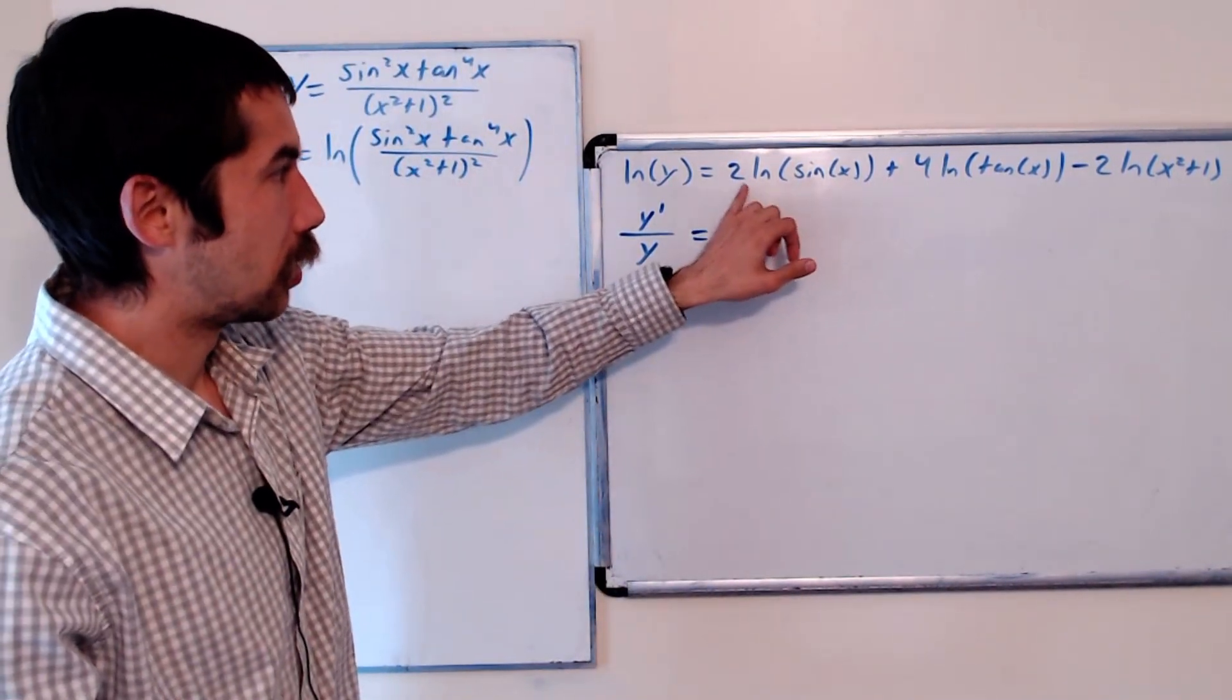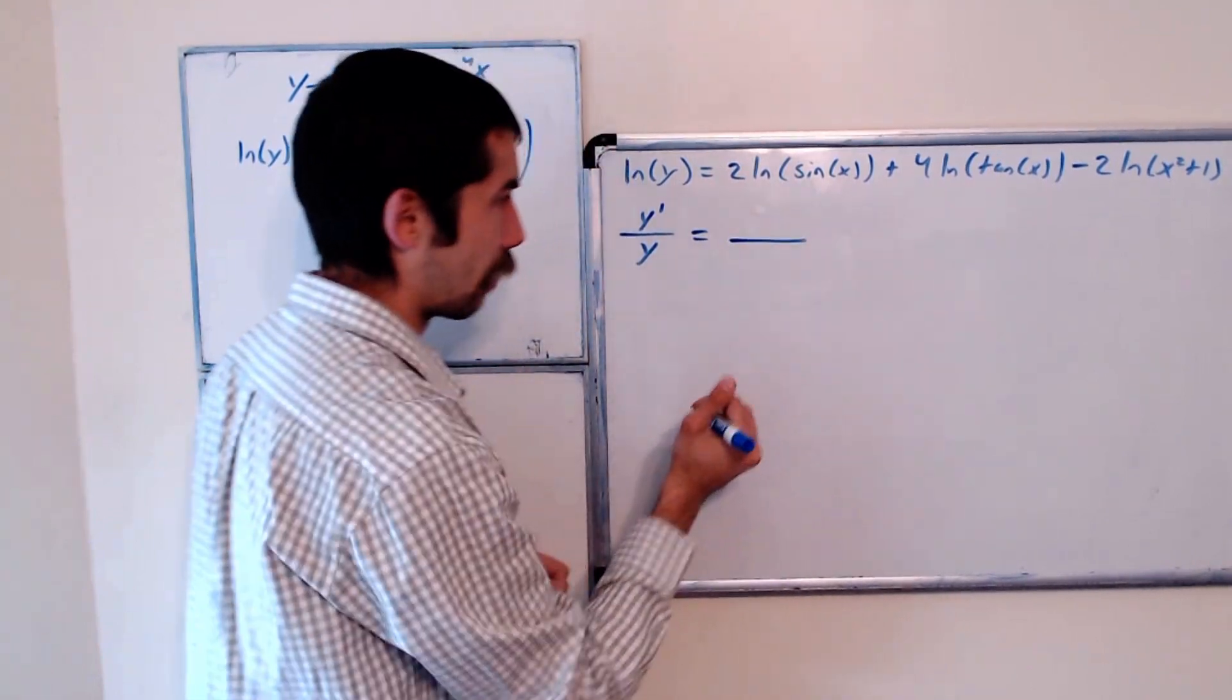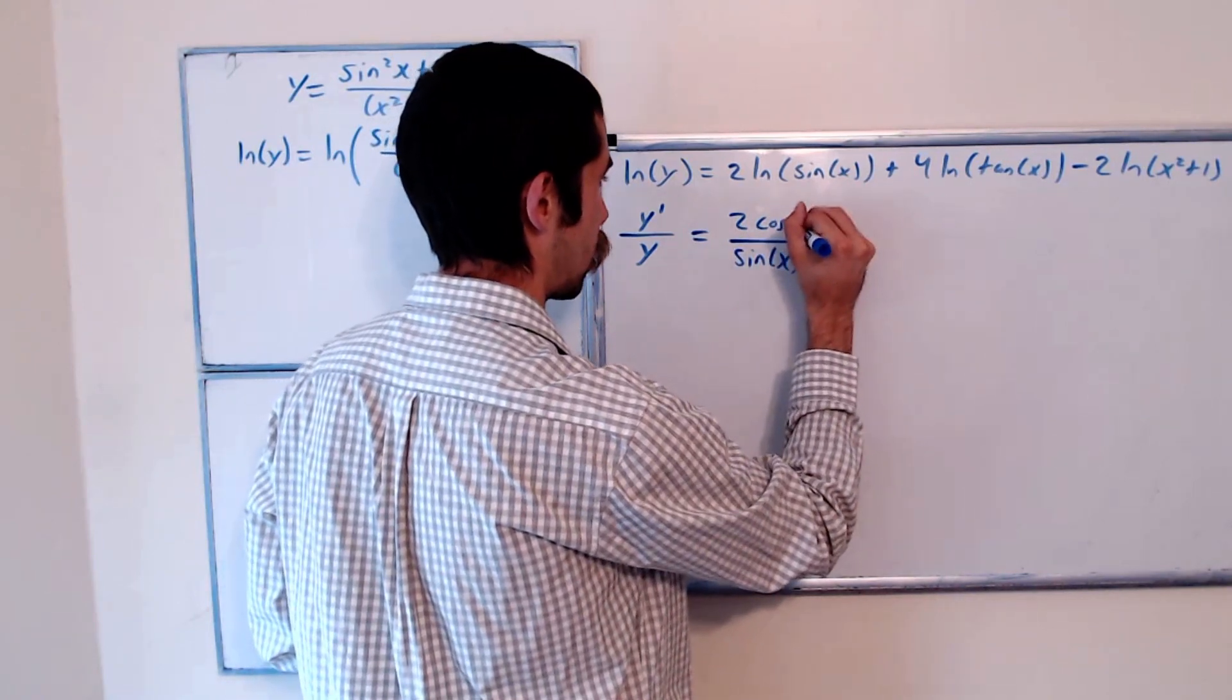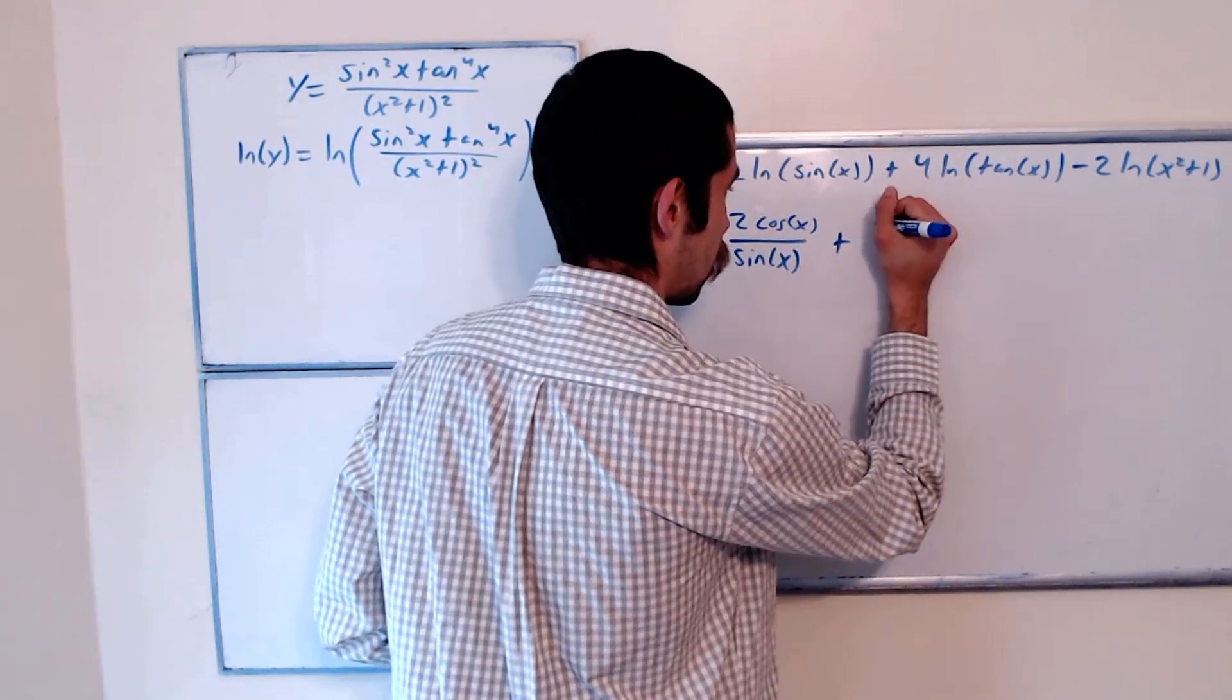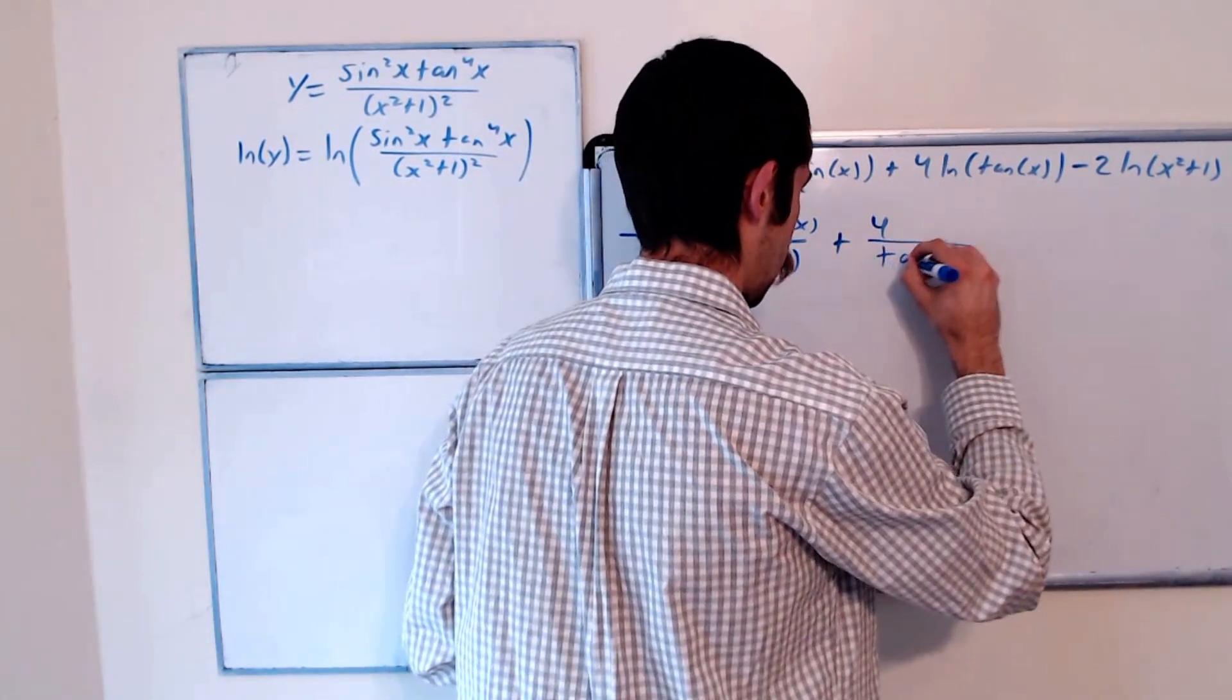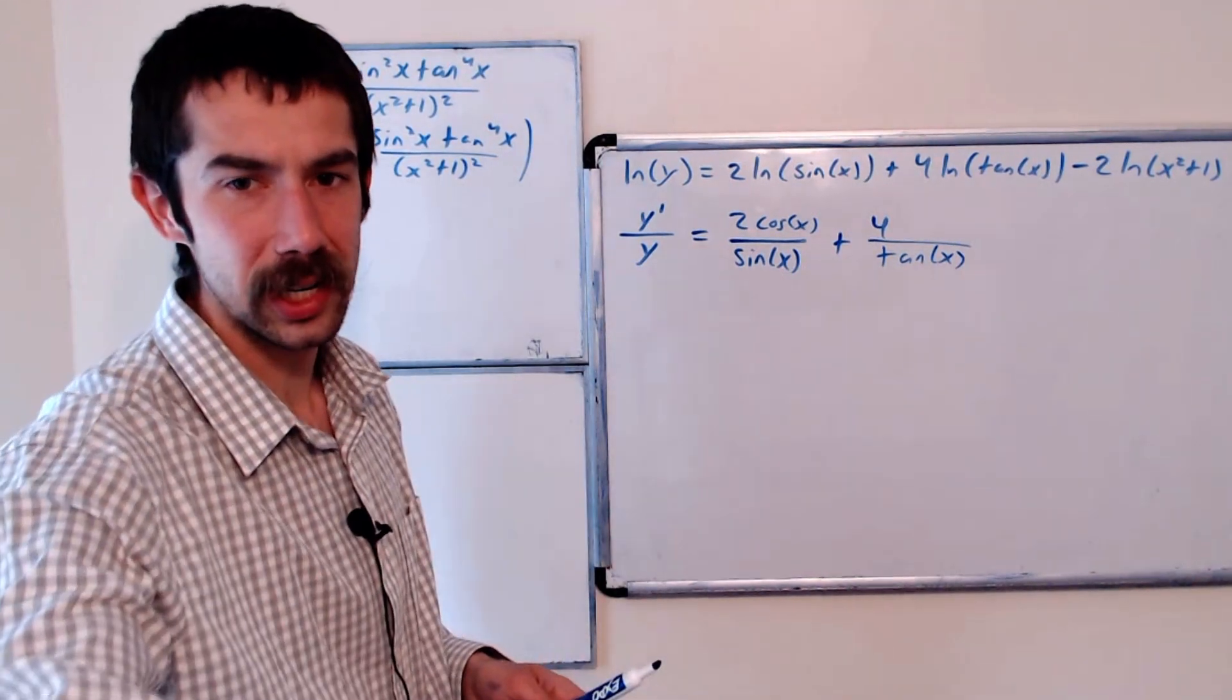On the right hand side, the derivative of ln of sine of x is 1 over sine of x times the derivative of the inside, which is cosine of x. So 2 cosine of x over sine of x. Similarly, what's the derivative of natural log of tangent of x? It's 1 over tangent of x times the derivative of tangent. What's the derivative of tangent of x? It's secant squared of x.